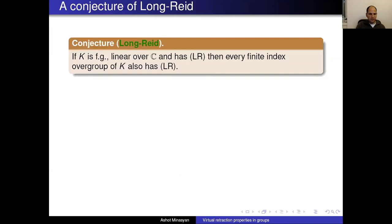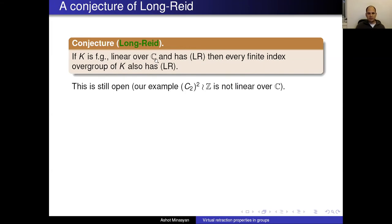The reason I got interested in this topic is a conjecture of Long and Reid — stated as a theorem in their paper but without proof. They conjectured that if K is a finitely generated linear group over ℂ, then LR is stable under passing to finite index overgroups: if K has LR, then every finite index overgroup of K also has LR.